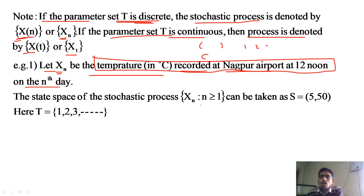What is the minimum temperature we can get? Consider 5 degrees as the minimum. And the maximum temperature would be around 50 degrees. So x(n) will take values in the range 5 to 50, which could be 10 degrees, 15 degrees, 15.5 degrees, 20.1 degrees — any value in that interval.